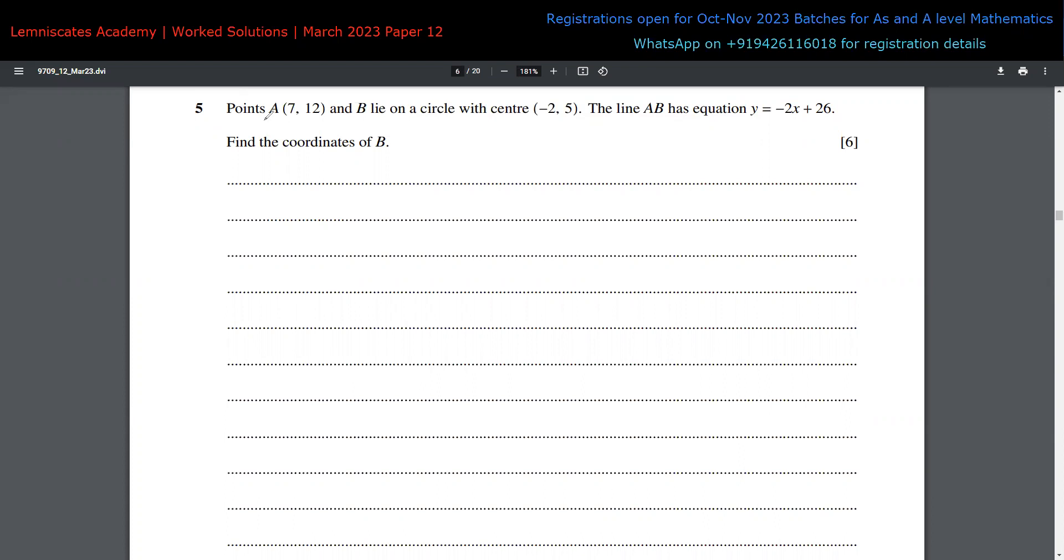Let's continue with question 5. We have point A at (7, 12) and point B whose coordinates are not given. Both points lie on a circle with center at (-2, 5). The line AB has equation Y = -2X + 26. We need to find the coordinates of point B.